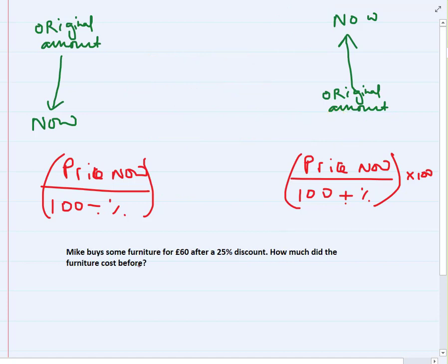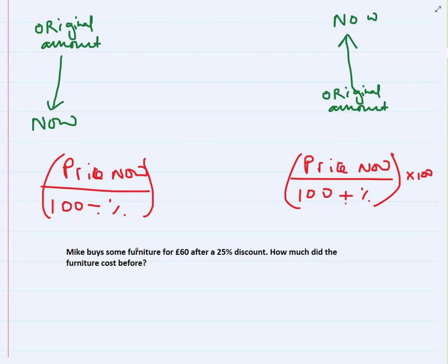Now try this one yourself. Mike buys some furniture for £60 after a 25% discount — how much did the furniture cost before? Pause the video and have a go. First, decide: has price gone up or down since the percentage change? Then put the numbers in the right place in the correct formula and you'll get your answer. Come back when you're done.